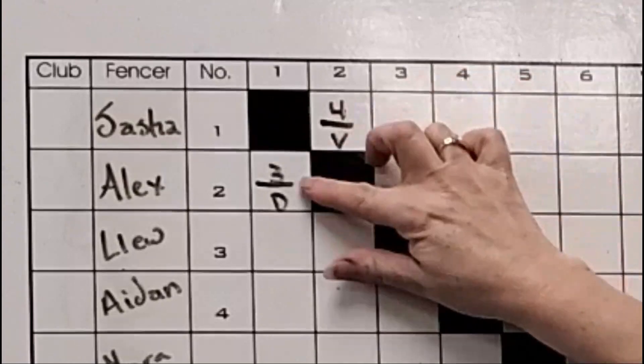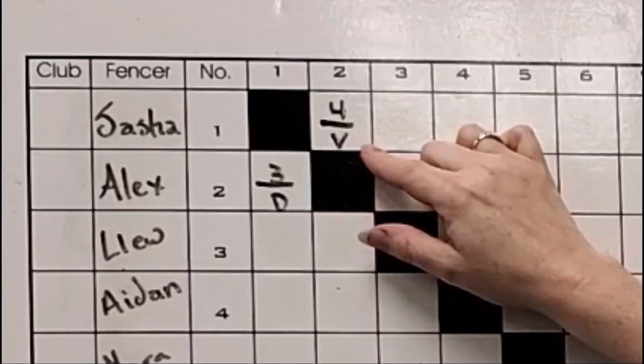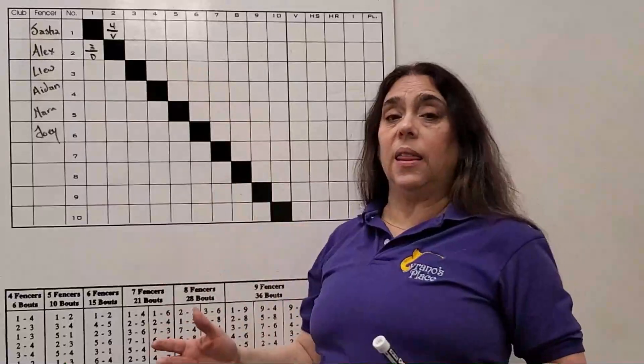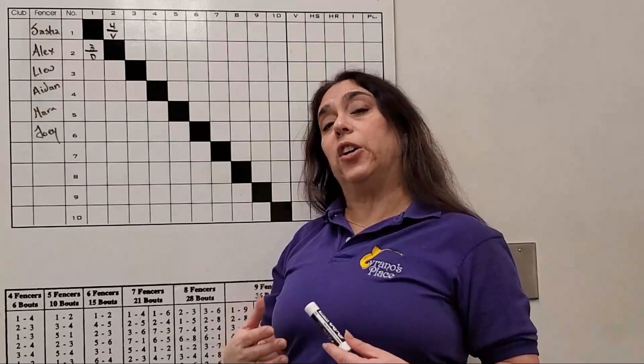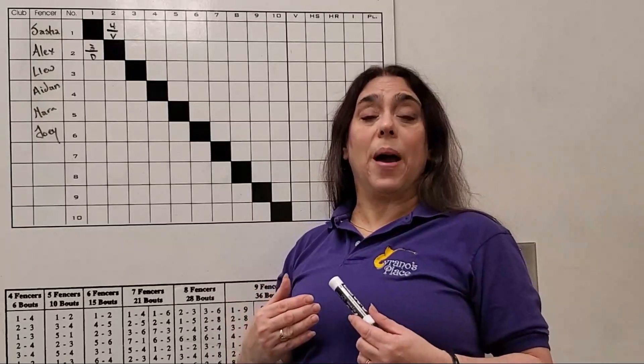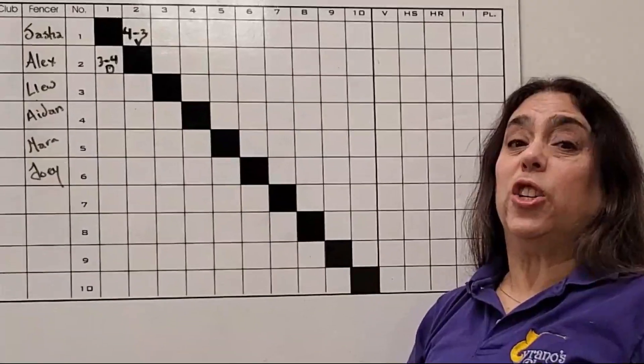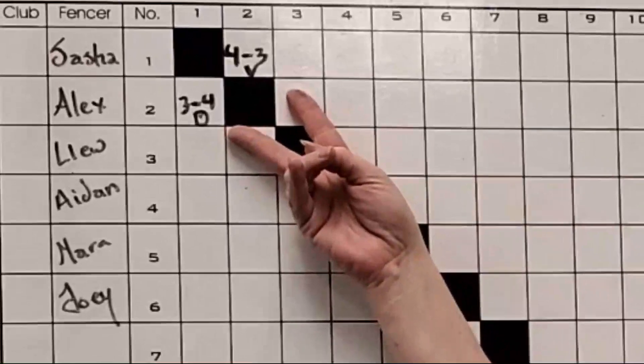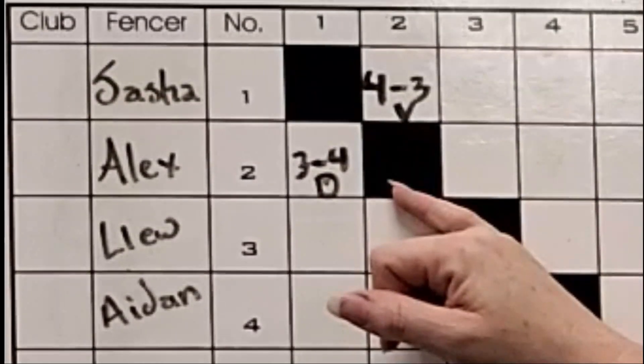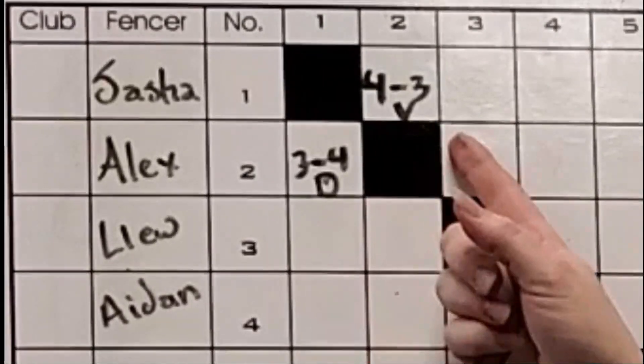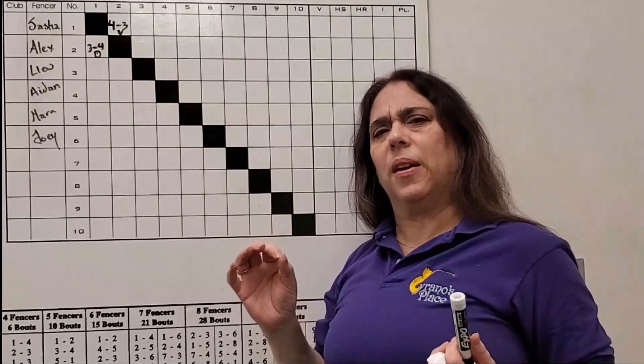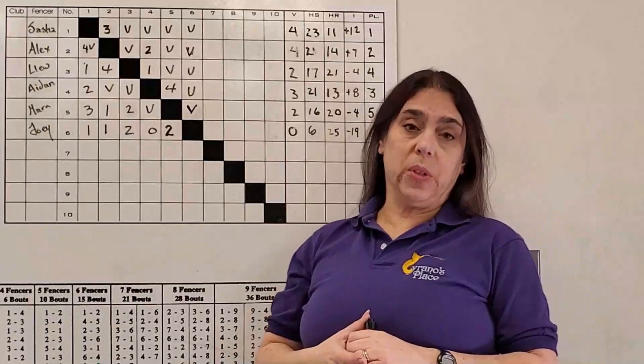The score which the fencer makes is on top, and V for victory or D for defeat will be written in. The key thing about writing in your score is to make sure, however it's written, it is clear to the bout committee what the score is. What you don't want to do is write in such a way that's confusing. You'll notice here that the score for both fencers are in both boxes. We can see with the V they won four to three, but that makes a very small amount of space very confusing.